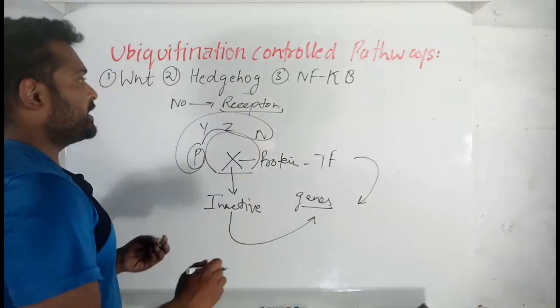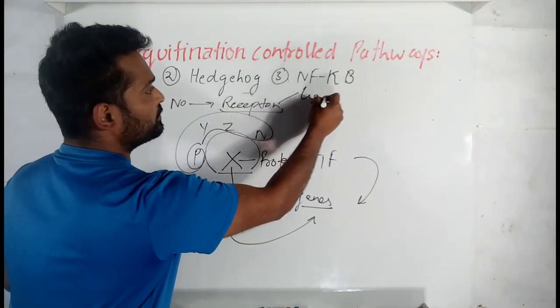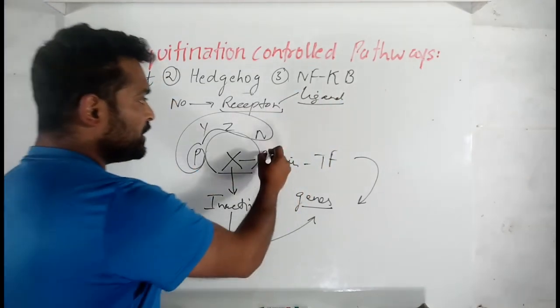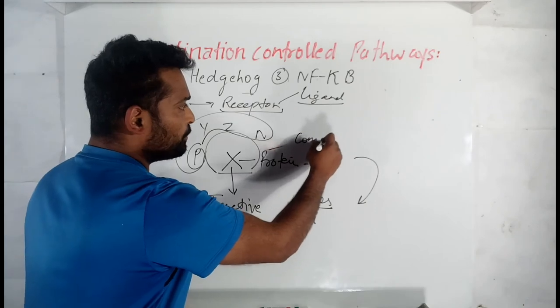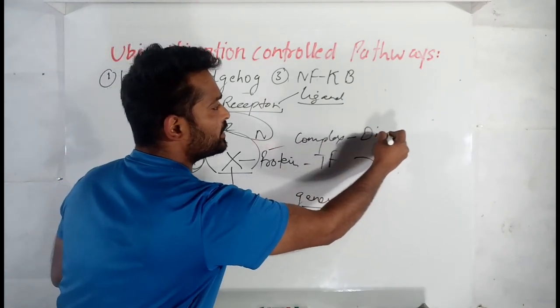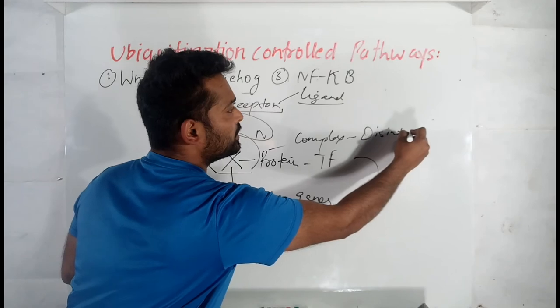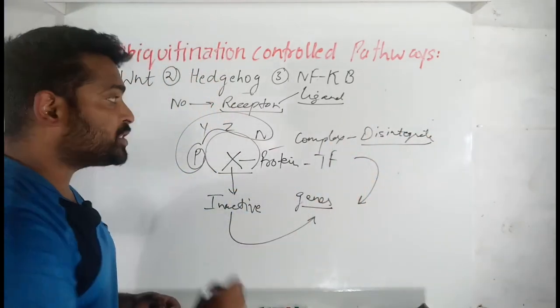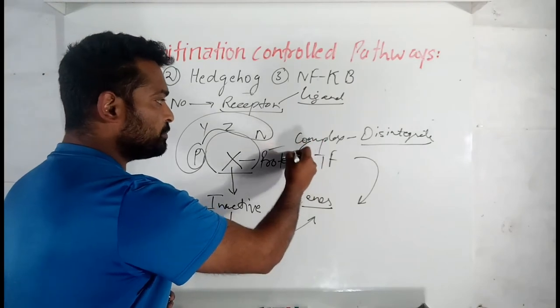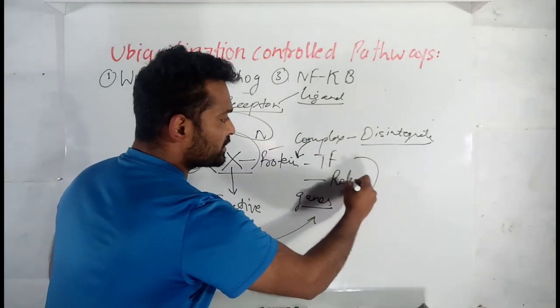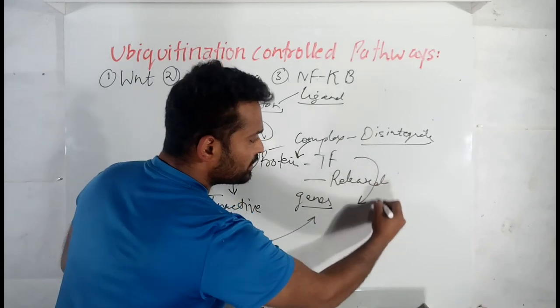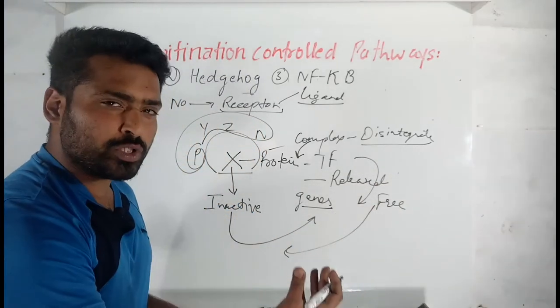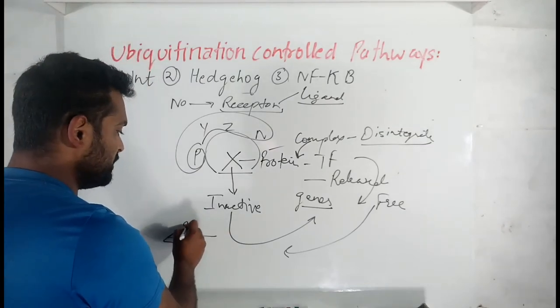Now suppose the ligand has bound, what would happen? This complex of proteins, it would disintegrate. This would break and the result is the inhibition which is caused by this complex on this protein, this is released and our protein is free and can go into the nucleus, initiate the transcription of the genes.